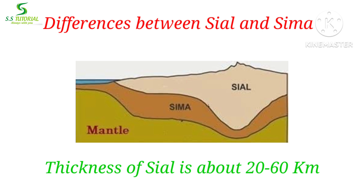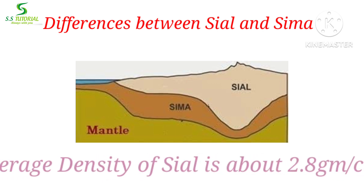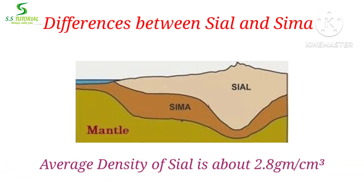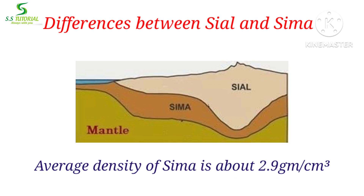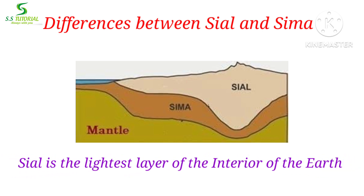The thickness of Sial is about 20 to 60 km, whereas the thickness of Sima is only 5 to 7 km. The average density of Sial is about 2.8 grams per cubic centimeter, whereas the average density of Sima is about 2.9 grams per cubic centimeter, indicating that Sima is denser than Sial. It must be noted that Sial is the lightest layer of the entire interior composition of the earth.